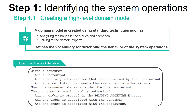Let's consider the place order story, which is expanded into many user scenarios. The nouns in this user scenario hint at the existence of various classes, including consumer, order, restaurant, and credit card.